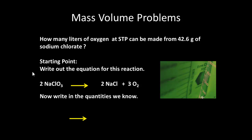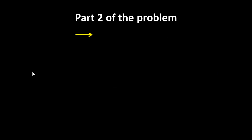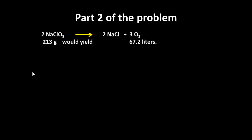What are the quantities that we know? There's only one quantity that we know at the moment, and that's that we've got 42.6 grams of sodium chlorate. The unknown we're looking for is the number of liters of oxygen. So if we have 2 lots of sodium chlorate giving 2 lots of sodium chloride plus 3 lots of oxygen, 213 grams of sodium chlorate would give 67.2 liters of oxygen.